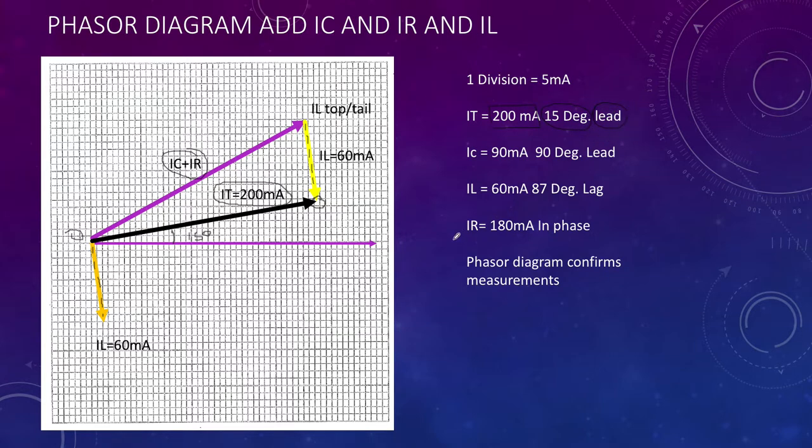There you have it. A resistor, capacitor and inductor in parallel. If you measure the currents and put those complex quantities onto a phasor diagram, they do add up and the numbers do confirm what we have measured.